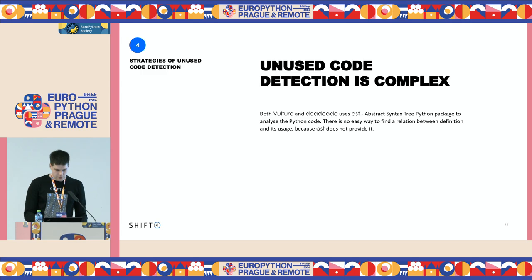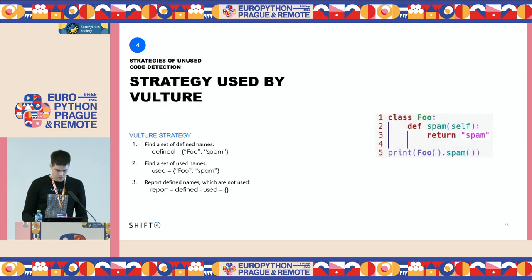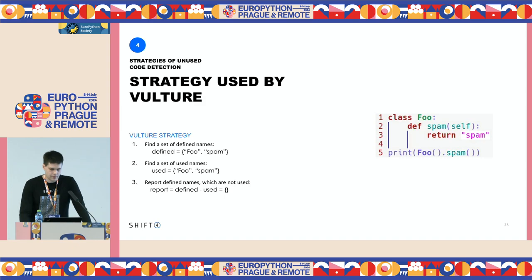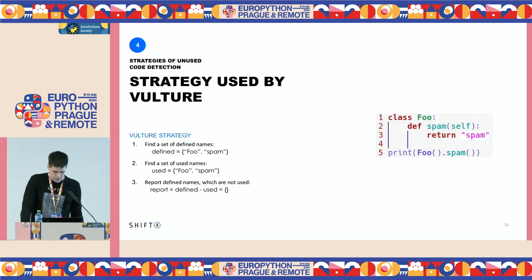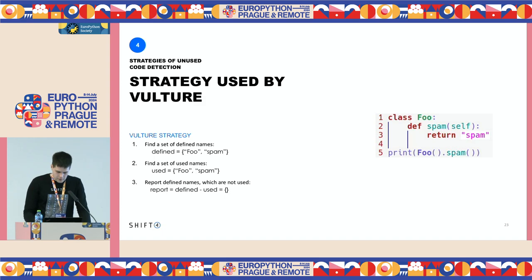Let's see how the strategy of the Vulture package works. This strategy is implemented in three steps: first, finding all defined names; second, finding all usages; and third, reporting those findings. In the first step, we find two names: foo and spam. In this simple code example these findings are correct, and on the fifth line we can see that the Foo class and spam method are being used. So used items are also found correctly, and in this simple case there won't be any findings.